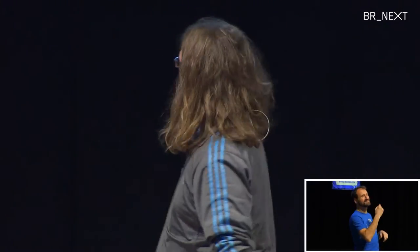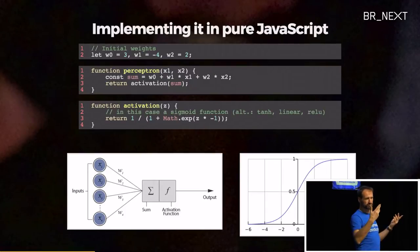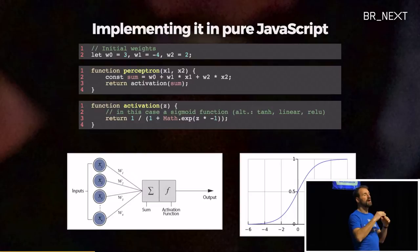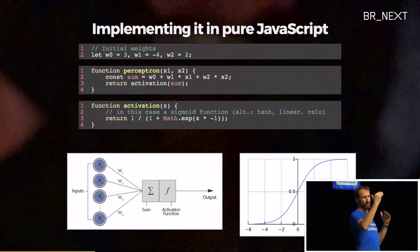Then it goes through an activation function — in our case it's a sigmoid function, displayed on your right. All activation functions sort of look like a step function, sometimes a little bit smooth, sometimes not. Sometimes they are linear. But you typically have something that adds a little bit of non-linearity to make things more interesting.